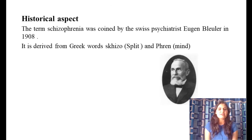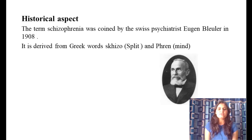Regarding the historical aspect, the term 'schizophrenia' was coined by Swiss psychiatrist Eugen Bleuler in 1908. It is derived from the Greek words 'schizo,' meaning split, and 'phren,' meaning mind — so schizophrenia literally means 'splitting of the mind.'